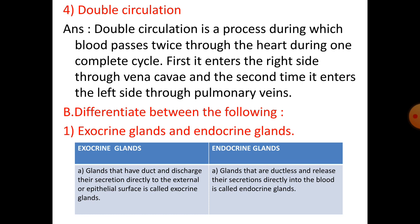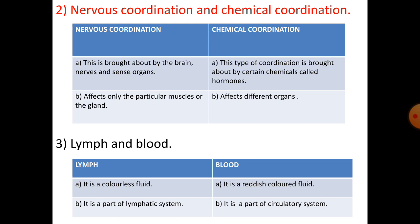Number B: differentiate between the following. Exocrine glands and endocrine glands. Exocrine glands are glands that have a duct and discharge their secretion directly to the external or epithelial surface. Endocrine glands are ductless glands that release their secretions directly into the blood.